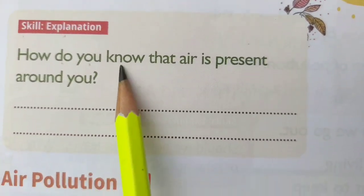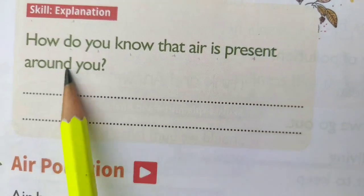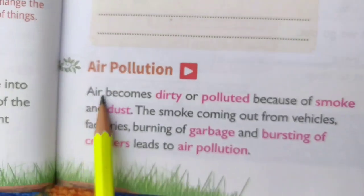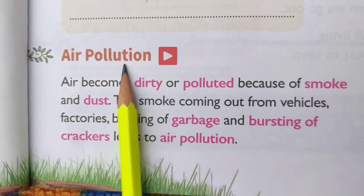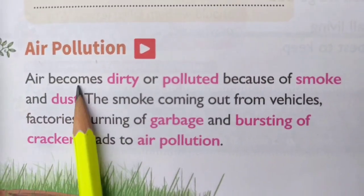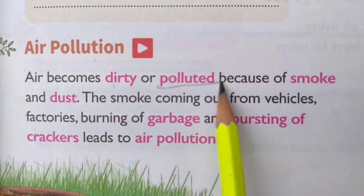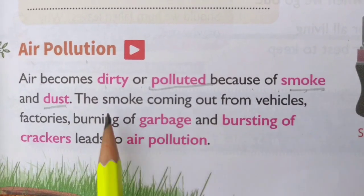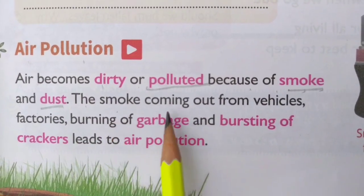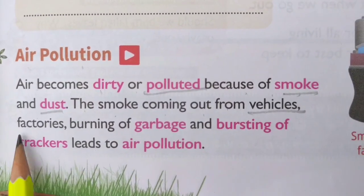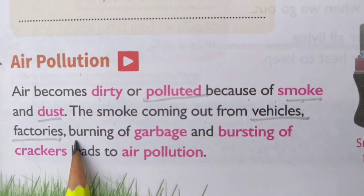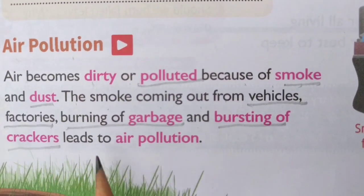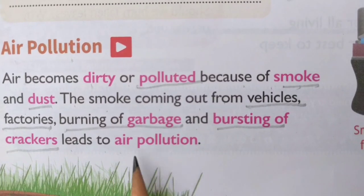How do you know that air is present around you? Write in your own words. Air pollution: Air becomes dirty or polluted because of smoke and dust. The smoke coming out from vehicles, fire, burning of garbage and bursting of crackers leads to air pollution.